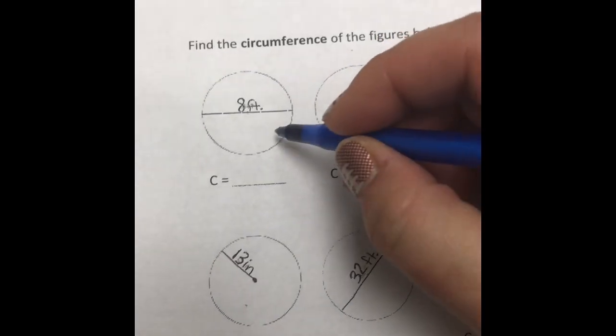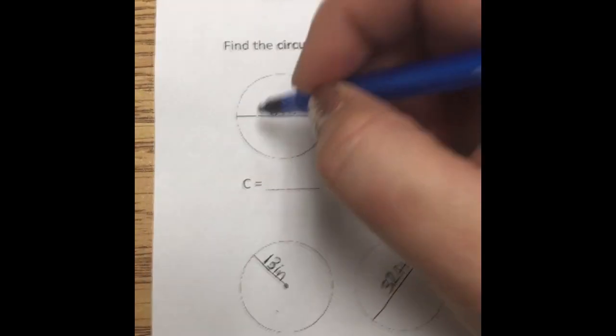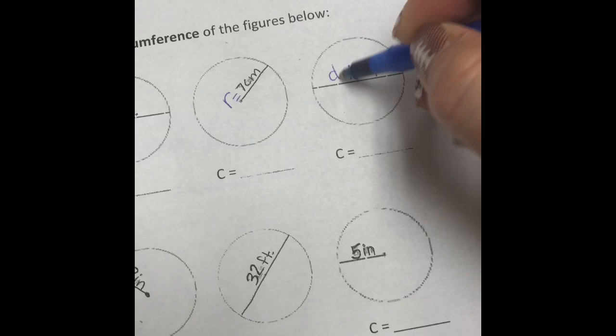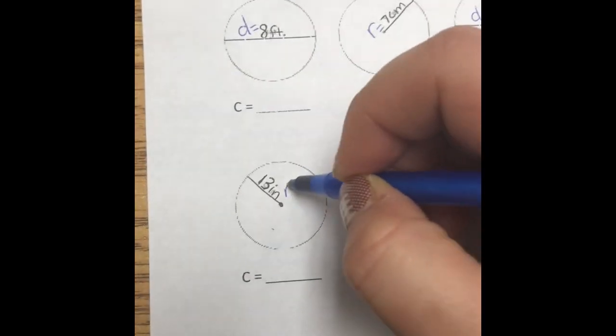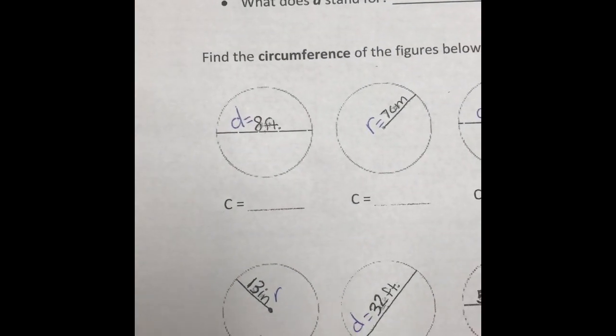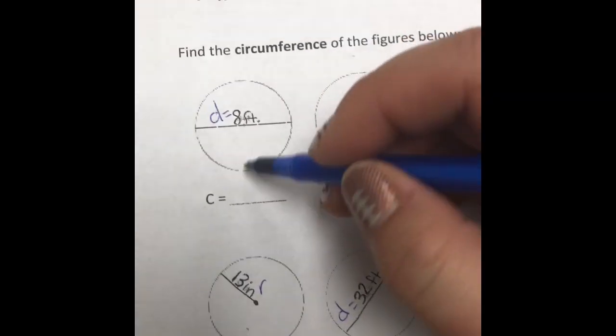You have a formula chart. You have a calculator. So all you have to do is plug in your numbers. You have to know, is this a diameter? So this is a diameter. But this is a radius. This is a diameter. This is a radius. This is a diameter. And this is a radius. So depending on what information you have, that's the formula you choose.